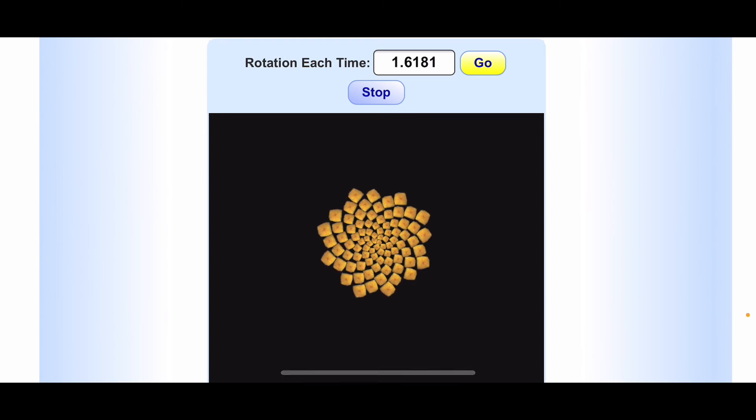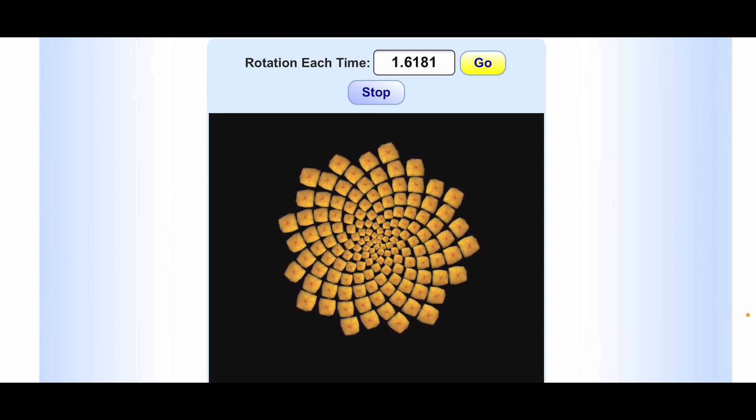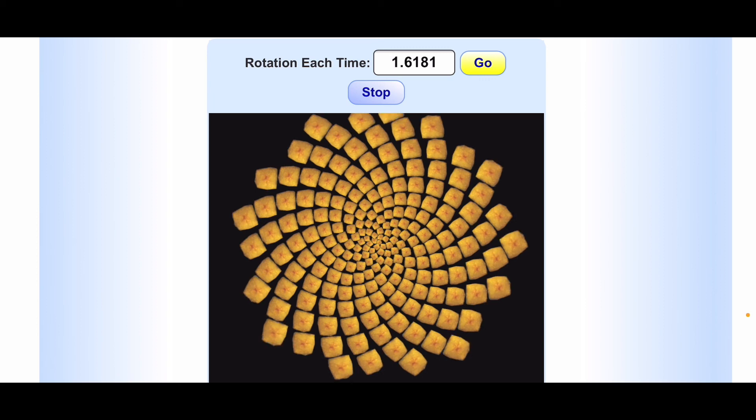By now, you might have noticed that the numbers I'm using are the ratios between the numbers of the Fibonacci sequence. Those numbers can all be written as fractions, which is the reason why we still see a lot of wasted space. With the bigger numbers in the sequence, such as 89 over 55 or 1.6181, we can't really count the number of visible spokes anymore, but we can still kind of see the similar pattern, and we don't want that.